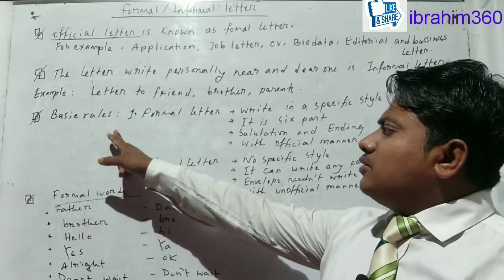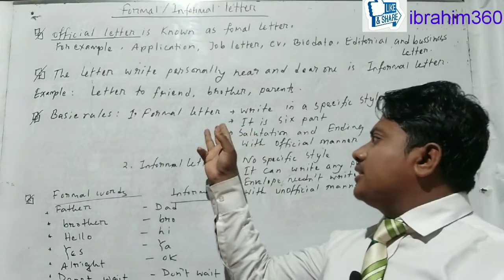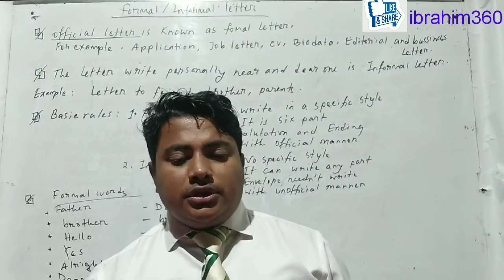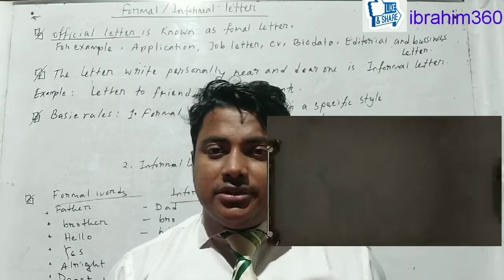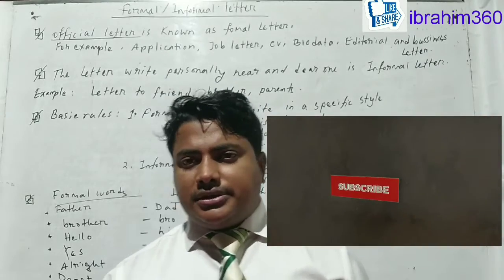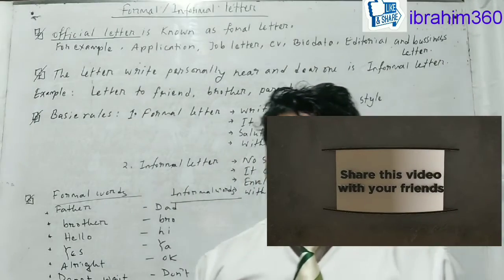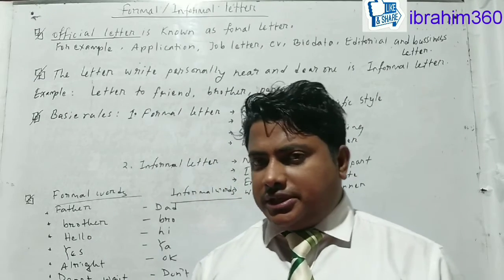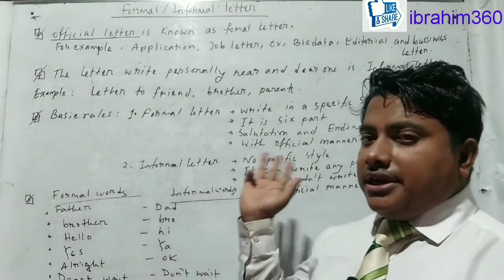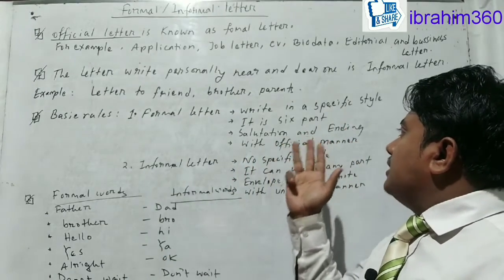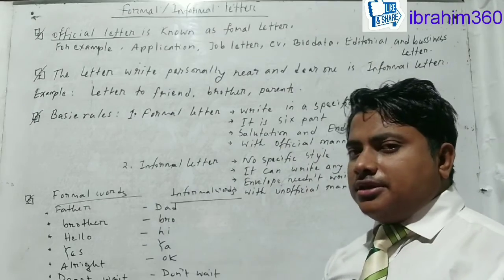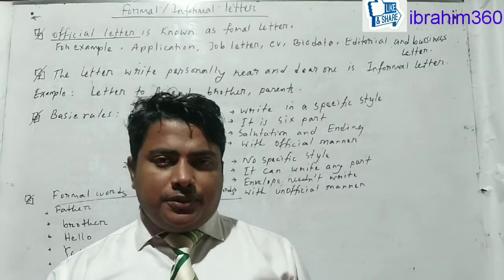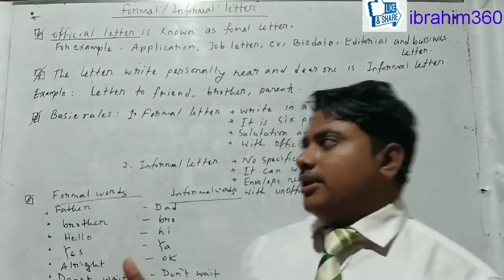The basic rules of an official or formal letter are that it is written in a specific style. We know the letter contains six parts. It has a specific salutation and ending. Finally, it is written in an official manner using official language. This is what defines the formal letter.